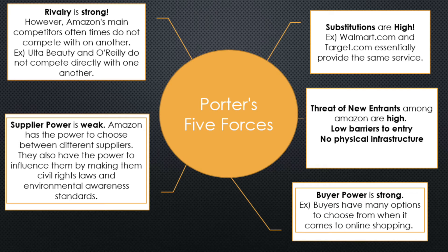Moving into Porter's Five Forces, rivalry is strong. However, Amazon's main competitors often do not compete with one another. For example, Ulta Beauty and O'Reilly don't compete directly with one another while they compete directly with Amazon. Switching over to supplier power, supplier power is weak. Amazon has the power to choose between different suppliers, and for most products there are multiple suppliers, especially online. Because there are so many suppliers, they cannot exert power over online businesses. Selling online saves money, and suppliers cannot afford to lose this connection with online retailers.